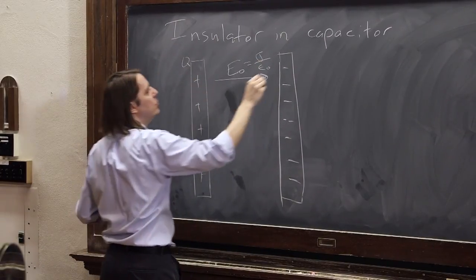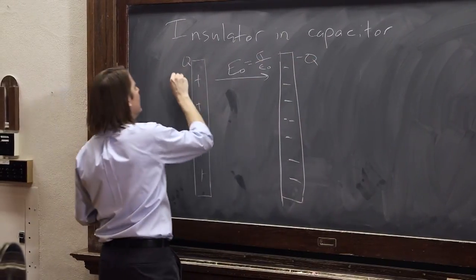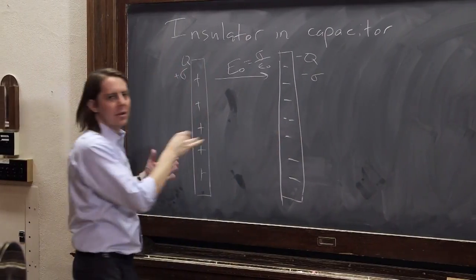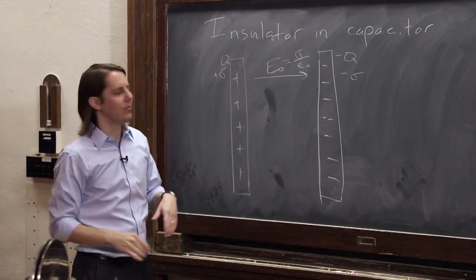If each one of these had a charge Q, plus Q, minus Q, and plus sigma, minus sigma, and they had some area, et cetera, we know that would be the electric field.